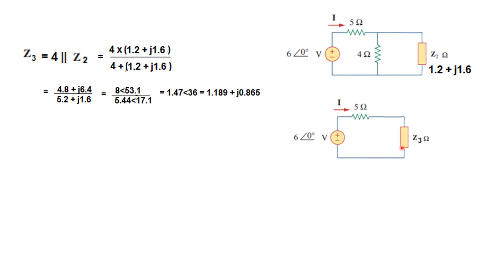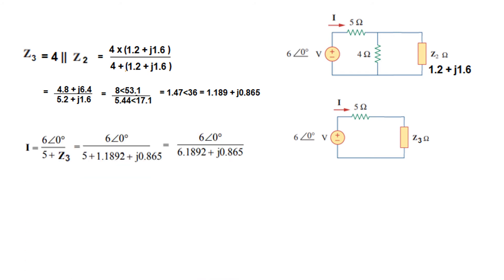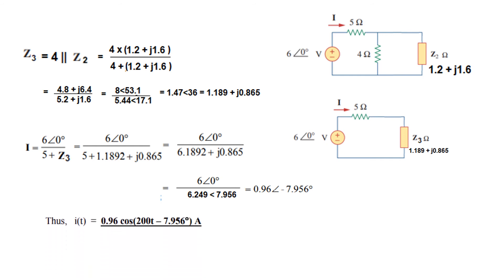With Z3 found, we calculate the current I as voltage divided by (5 plus Z3). Substituting Z3, converting into polar form, and dividing gives I equal to 0.96 at angle minus 7.956 degrees. Since the question asks for i(t) not the phasor, we convert to time domain: i(t) = 0.96 cos(200t minus 7.956°).